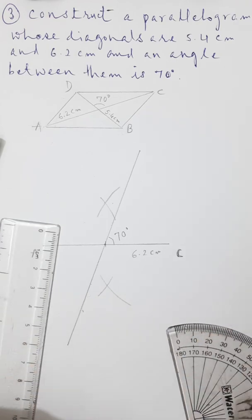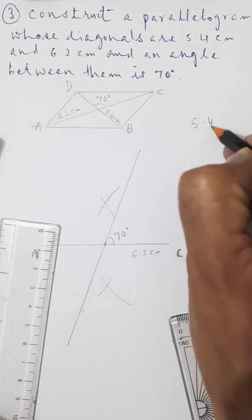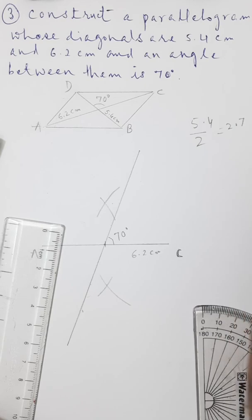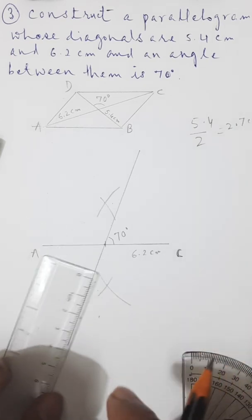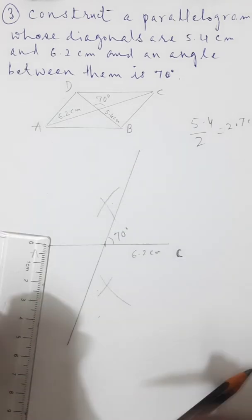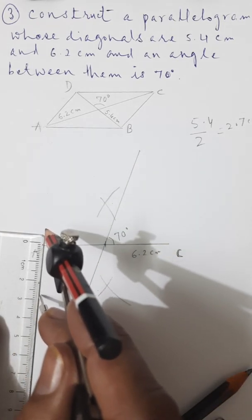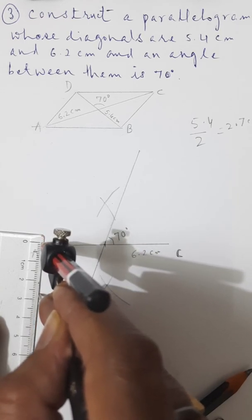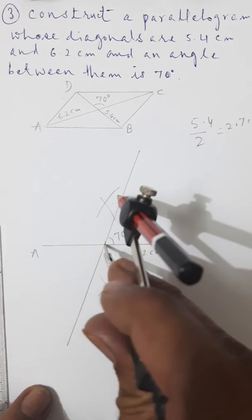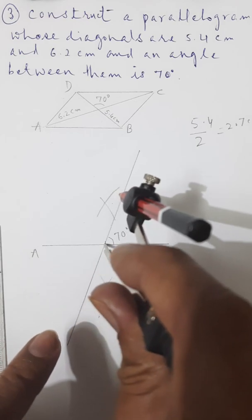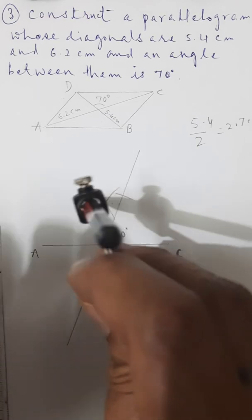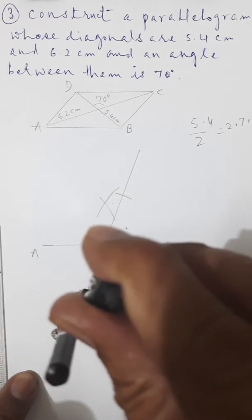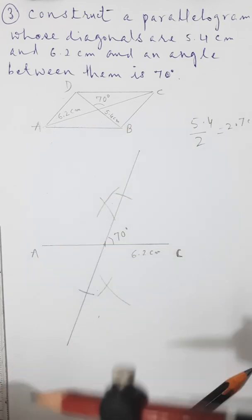This is another diagonal of 5.4 centimeters. Half of 5.4 is 2.7 centimeters. Measure the length of 2.7 centimeters by compass and scale. Keep the pin point at the center and cut an arc on this diagonal on both sides — one upside and one downside.